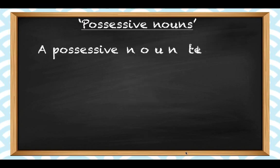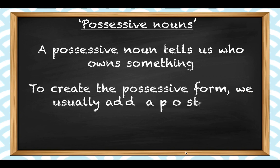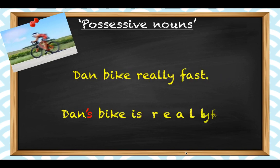A possessive noun tells us about who owns something or in whose possession it is. To create the possessive form of a noun, we usually have to add apostrophe S at the end of it. So for example, if we want to talk about the bike that my friend Dan has, I can't say 'Dan bike really fast.' I need to say 'Dan's bike is really fast.' The apostrophe S makes the proper noun Dan a possessive noun.